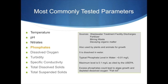Phosphates, like nitrates, usually come from wastewater treatment facility discharge, fertilizers, mining waste, and decaying organic matter. Similarly, excess phosphates and nitrates could lead to algae growth and deplete oxygen, which will end up killing the organisms living within.